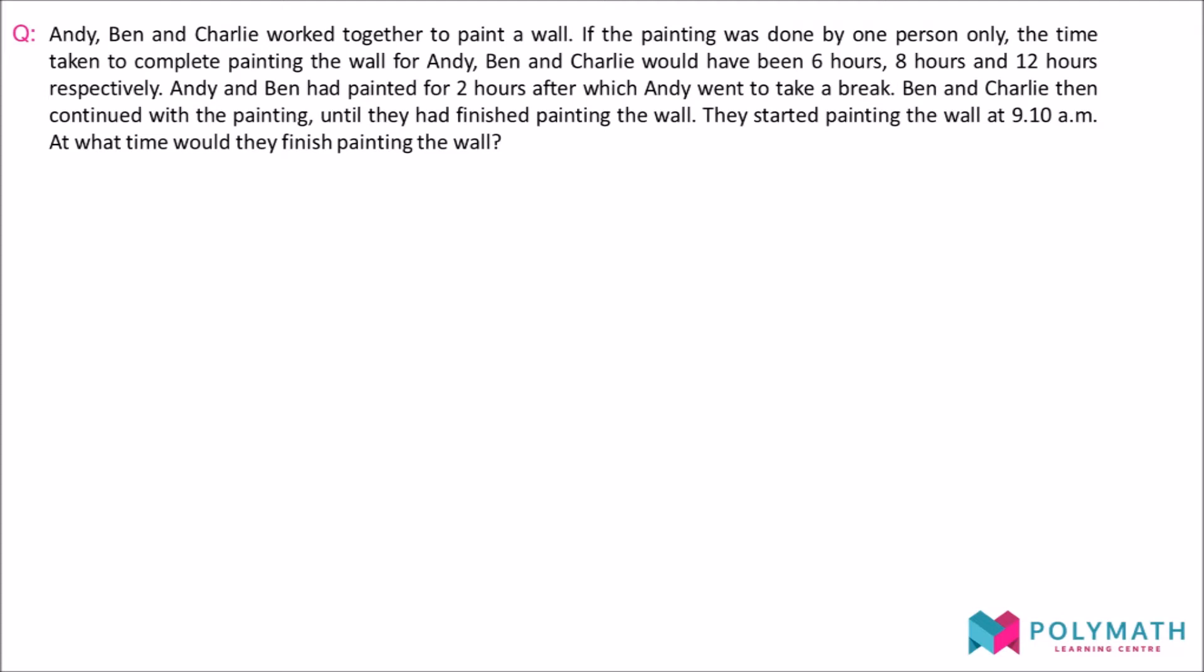The question is: Andy, Ben and Charlie worked together to paint a wall. If the painting was done by one person only, the time taken to complete painting the wall for Andy, Ben and Charlie would have been 6 hours, 8 hours and 12 hours respectively.